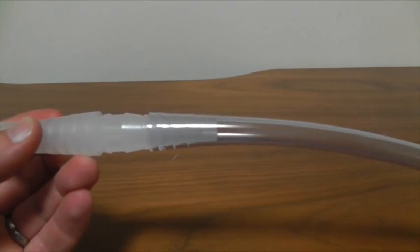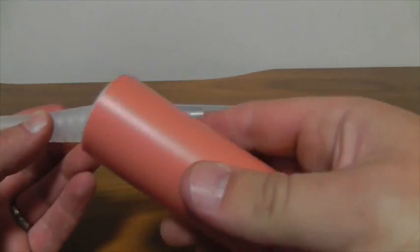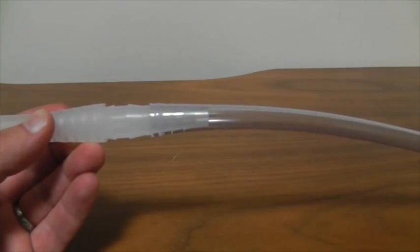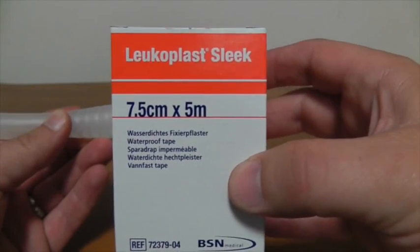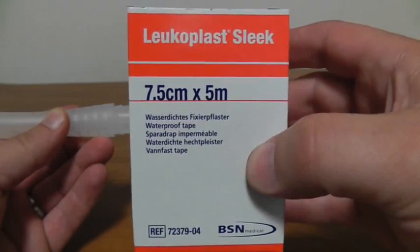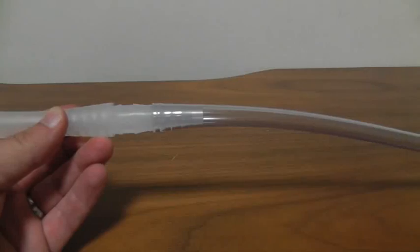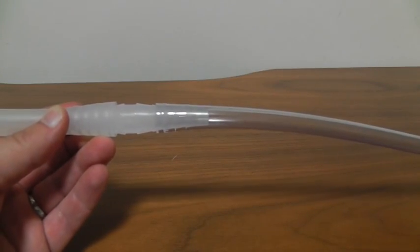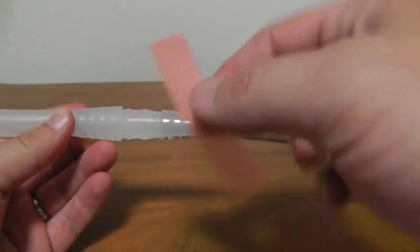What you're going to need next is four pieces of Sleek. So this is Sleek plasticky orange tape. This is what the box looks like if you haven't ordered it before. Leukoplast Sleek. I'm not fussed about which brand you use, but the 7.5cm is a good width to use. You're going to need four pieces that are about a centimeter wide, 7.5cm long.